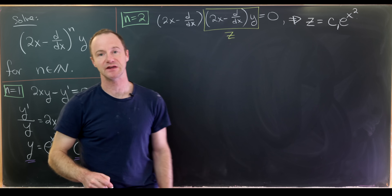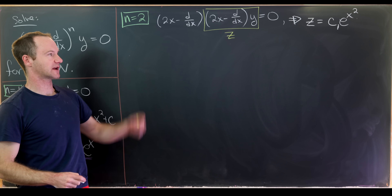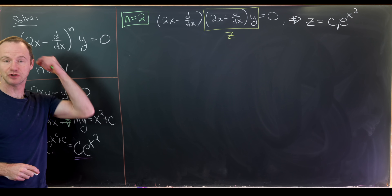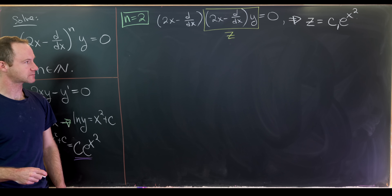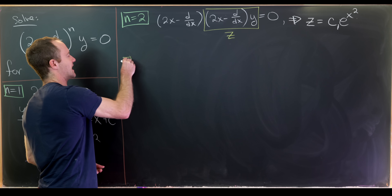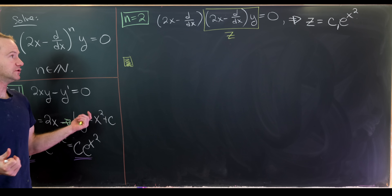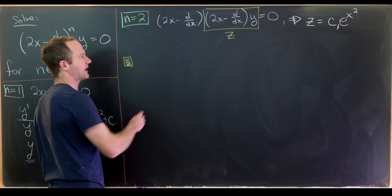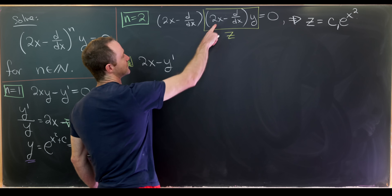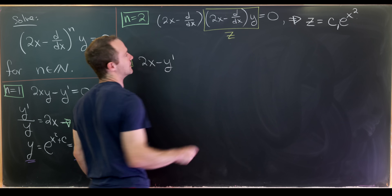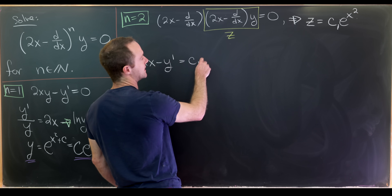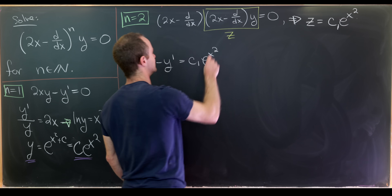So z equals c1 times e to the x squared, where I call the constant c1 because we now have a second-order equation and expect two arbitrary constants. Taking the definition of z, we get a new differential equation for y: 2xy minus y prime equals c1 times e to the x squared.